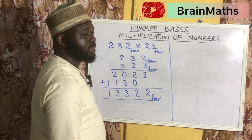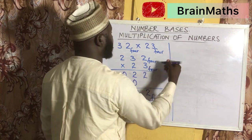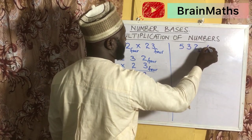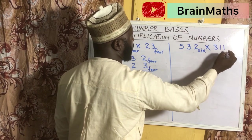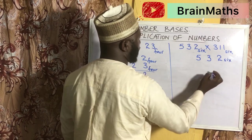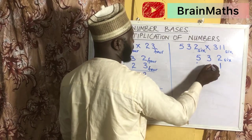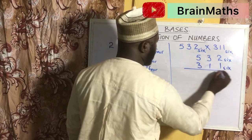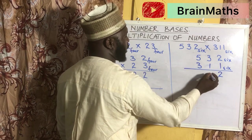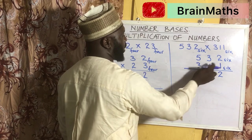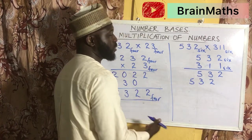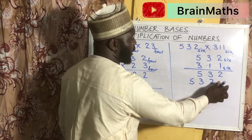Also, if we are given another multiplication, let's say in base 6 — 532 in base 6 multiplied by 311 also in base 6. For the first row (1 times each digit): 1 times 2 is 2, 1 times 3 is 3, 1 times 5 is 5. For the second row: 1 times 2 is 2, 1 times 3 is 3, 1 times 5 is 5. I did not do any special division because none of the numbers exceed 5.